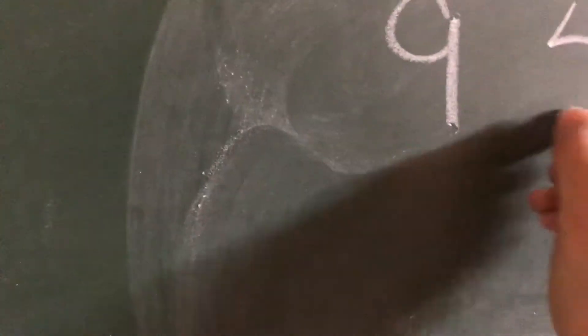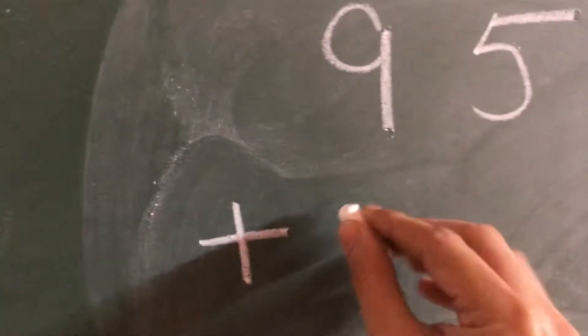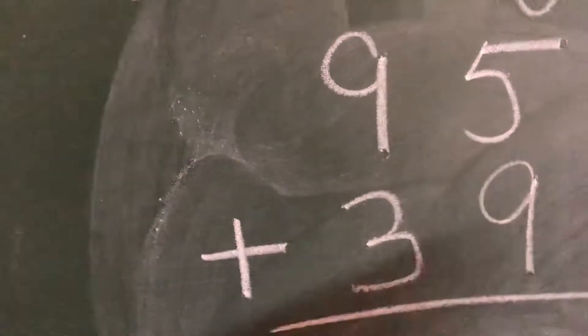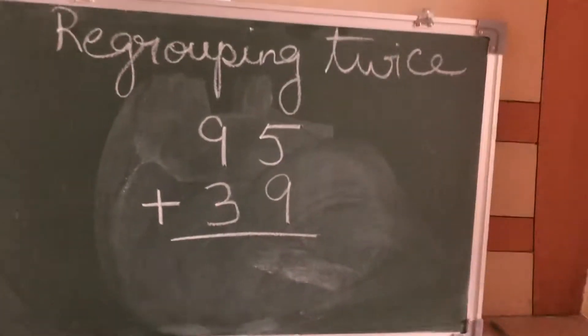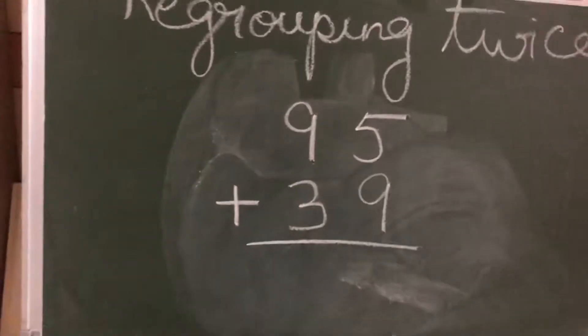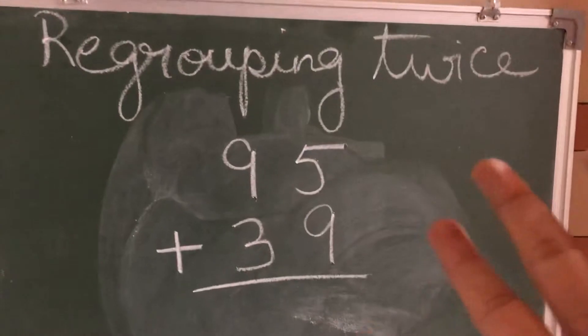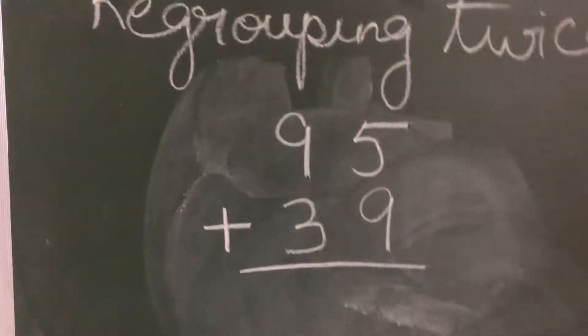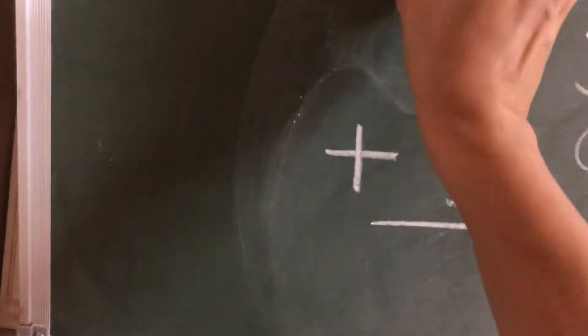Let me complete one more sum. If I have a number suppose 95 plus 39. Now 5 plus 9, which is the bigger number? 9. 9 in your mind, 5 fingers out. After 9 start counting: 10, 11, 12, 13, and 14. So I got 14. 1 ten carry and 4 here.